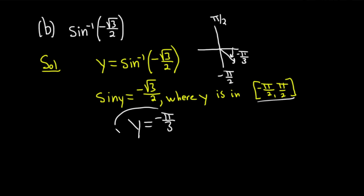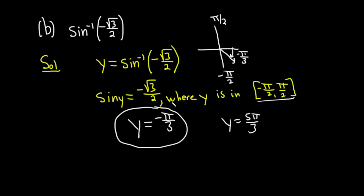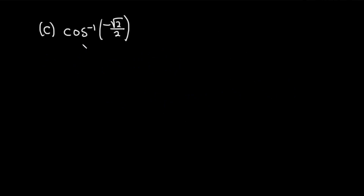This is a good example showing that if you didn't know the range restriction, you might say y is 5π/3, which also gives you negative √3/2, but it's not between those numbers — so it's super key to keep that in mind. Let's do another example with a different trig function. Part C: we have cosine inverse of negative √2/2.